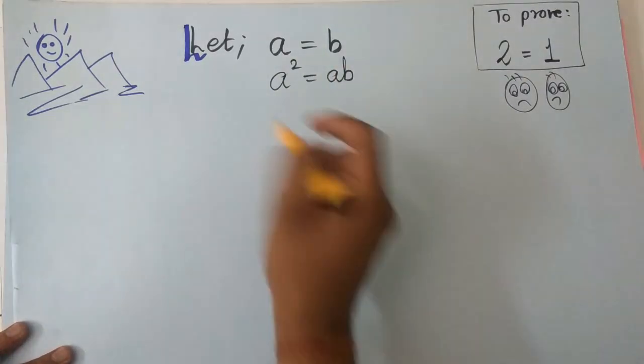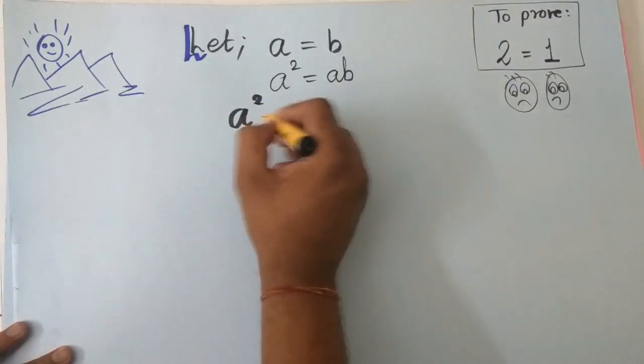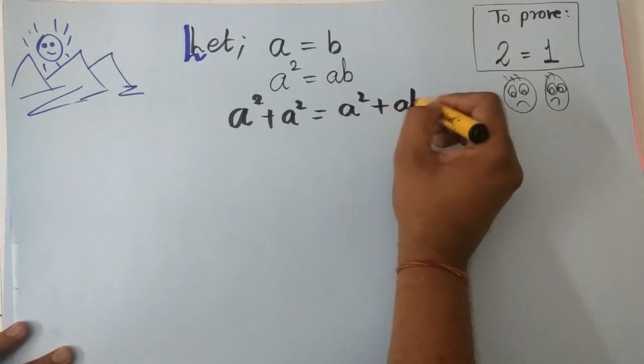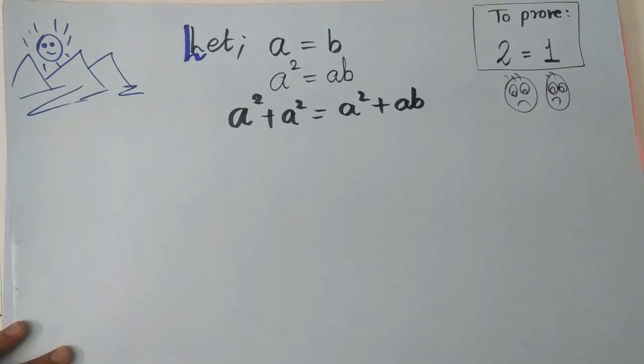Add a square both sides, so it would become a square plus a square and here a square plus ab. The next step is...